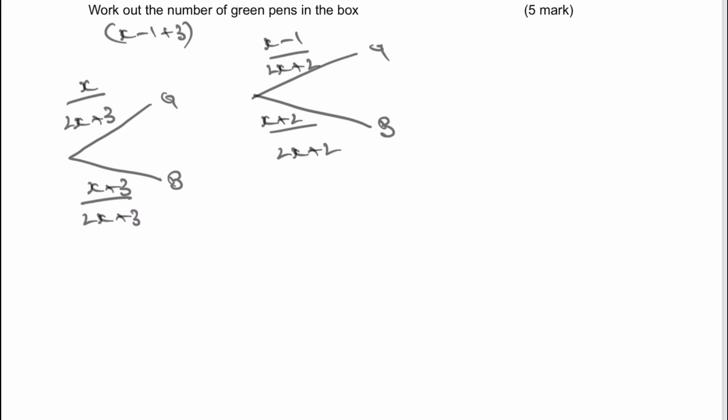I'm going to draw my second probability if they took a blue pen the first time round. It's going to be 2x plus 2 as denominators. If I took a blue pen the first time round, there's still going to be the same number of green pens, that's x. However, there's going to be one less blue pen, so therefore it's x plus 2.